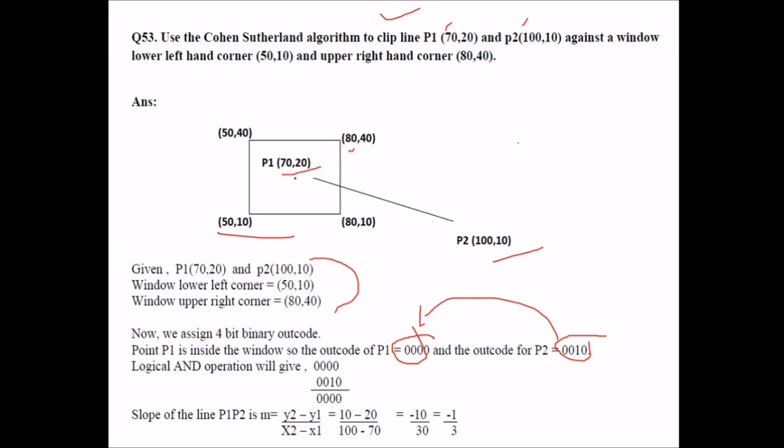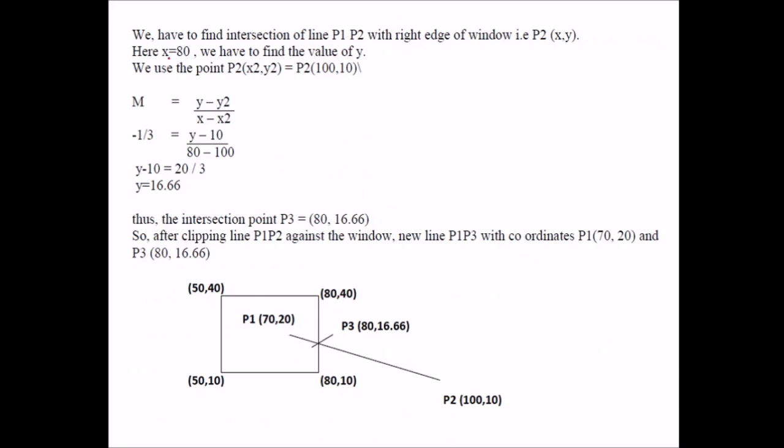But let us take the slope of P1 P2, that is slope means M, that is Y2 minus Y1 by X2 minus X1 given by this. We compute it. So we have to find the intersection of this line given P2 with the right edge of window. This is the intersection point. So here X is equal to 80. So we have to find the value of Y.